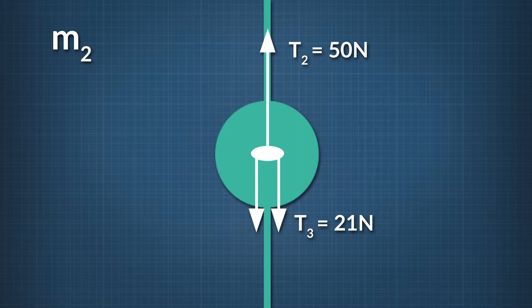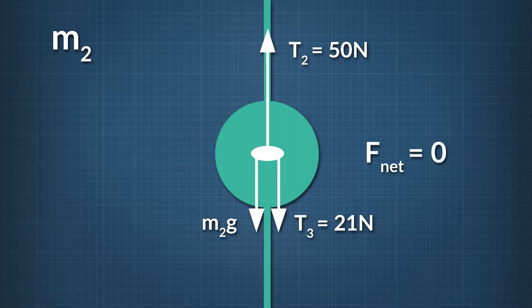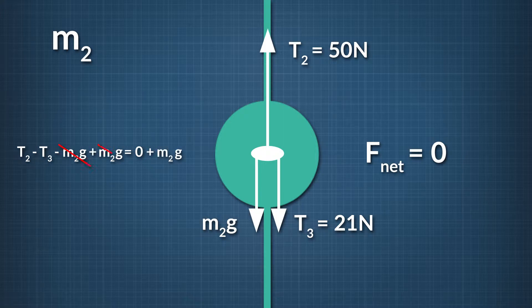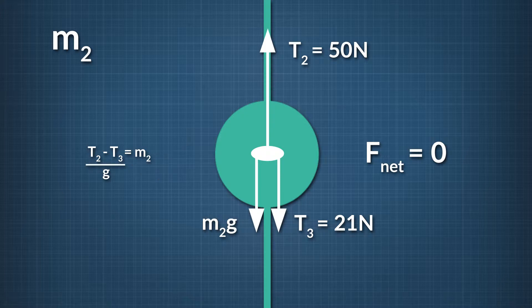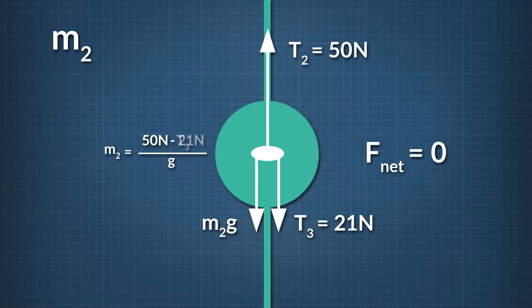Now let's look at a free-body diagram on m2. m2 has a tension force T2 pulling up, a tension force T3 pulling down, and the force of gravity m2 times g also pulling down. The mass is in equilibrium, so the total force on m2 is zero. This means T2 minus T3 minus m2 times g equals zero. Solving, m2 equals T2 minus T3, all divided by g. Plugging in 50 newtons for T2, 21 newtons for T3, and 9.8 meters per second squared for g, we find that m2 equals 3 kilograms.